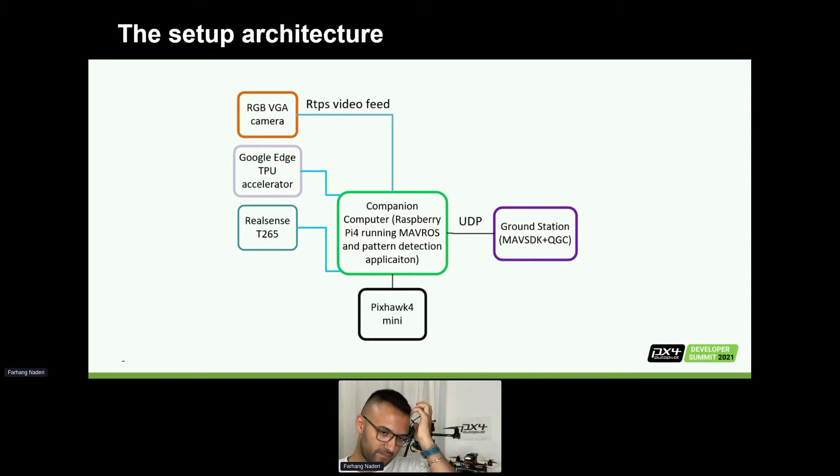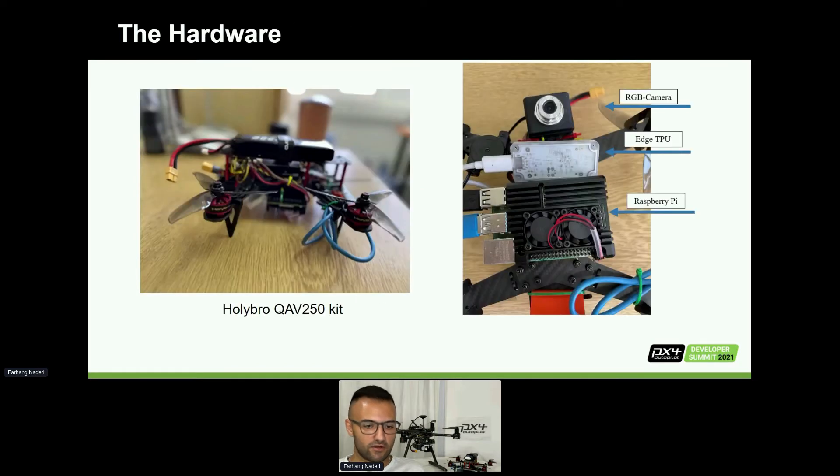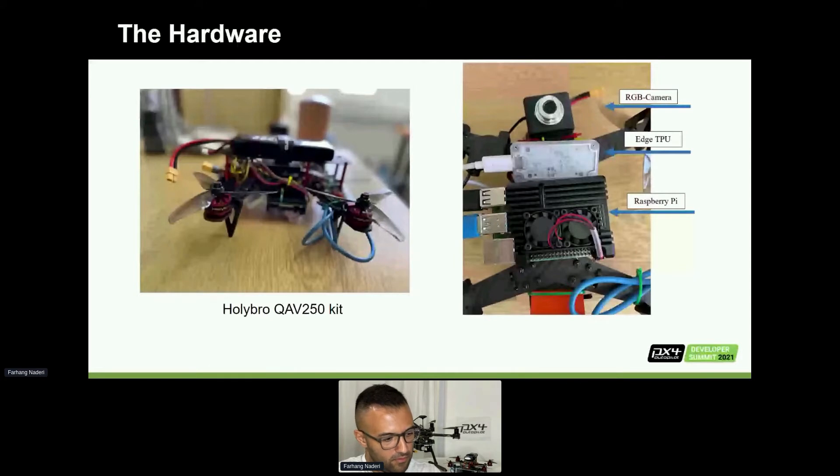The real hardware is one Holybro QAV250 kit. You can see in details on the right side how we implemented it. We have a simple USB RGB camera, one TPU accelerator, and one Raspberry Pi.